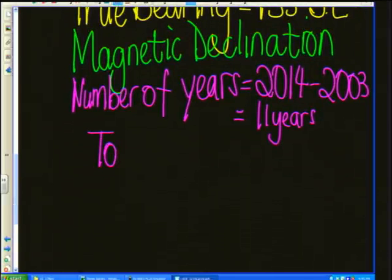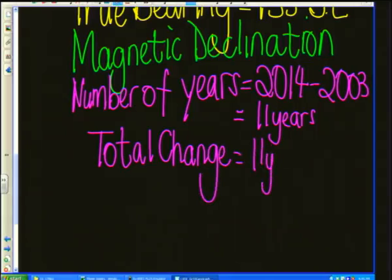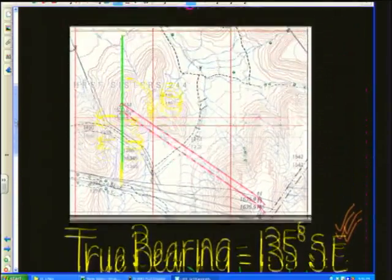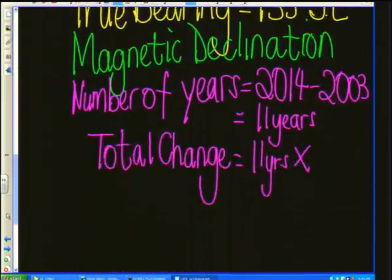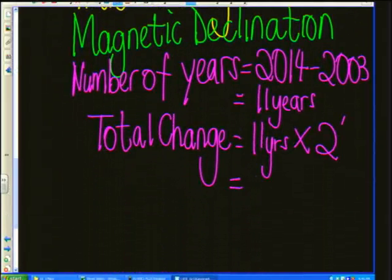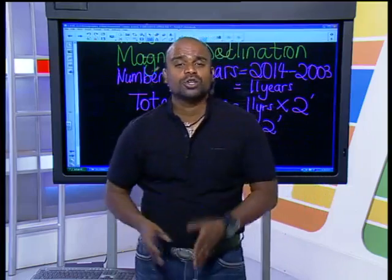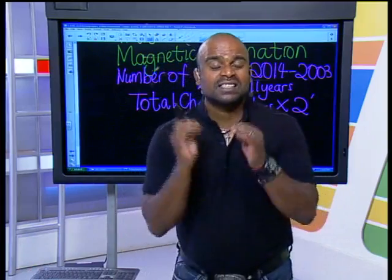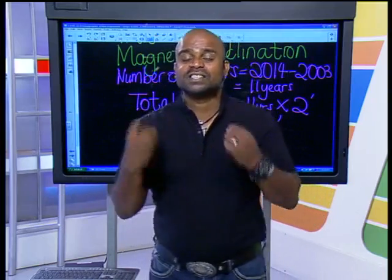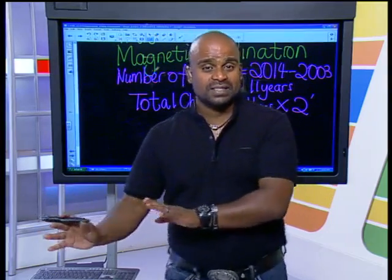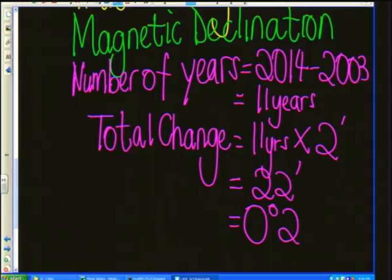Once I've established the number of years, I can calculate the total change. I take my number of years — 11 years — and multiply it by the mean annual change, which was 2 minutes westwards. So 11 years times 2 minutes gives us 22 minutes. Now, always ask yourself: how many times does 60 go into your minutes? In this example we have 22 minutes — 60 doesn't go into 22, so my correct answer is 0 degrees and 22 minutes.